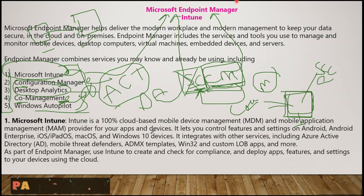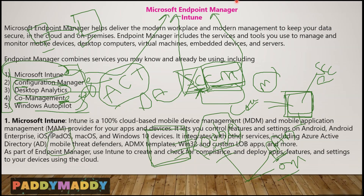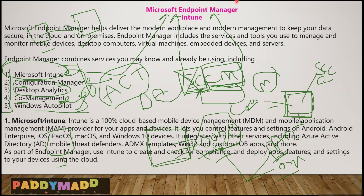Autopilot is a technology. When you try to set up a device, you normally get region, language, and keyboard options — that's called OOBE, the Out-of-Box Experience. This experience can be automated, and the machine can also join either Azure AD or your on-premises Active Directory automatically. For example, a device purchased from Lenovo or Dell will ask you for username, password, region — all of those normal things. With Autopilot, all of that can be automated.